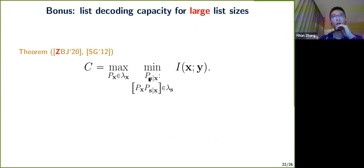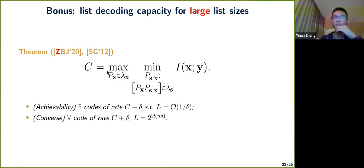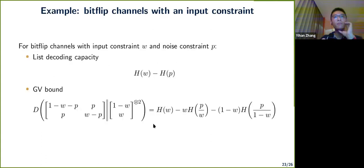We also understand the limit as l goes to infinity. If you operate at rate slightly below the capacity C_∞, you can achieve list size 1/delta (large but constant in n). On the other hand, above C_∞, the list size must be exponential in n — which is truly bad.